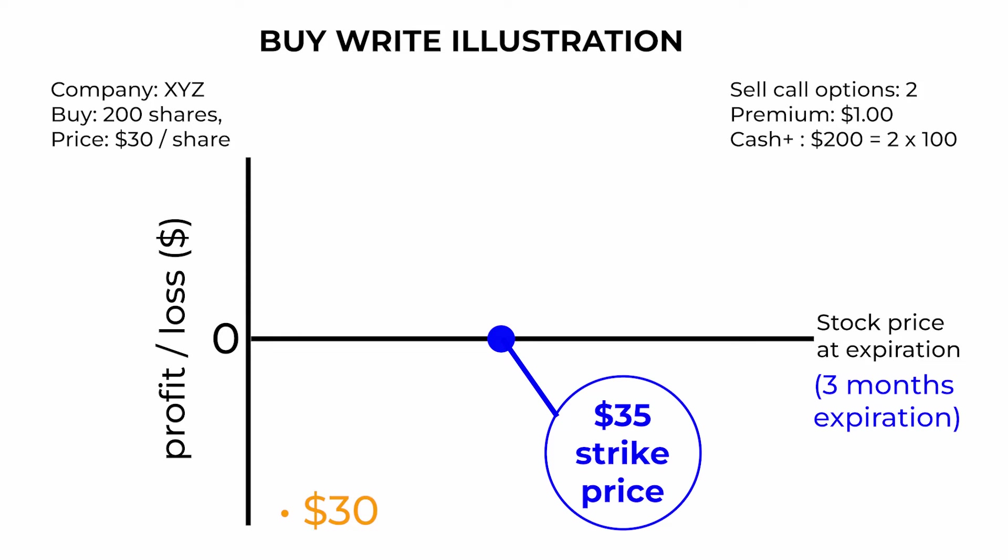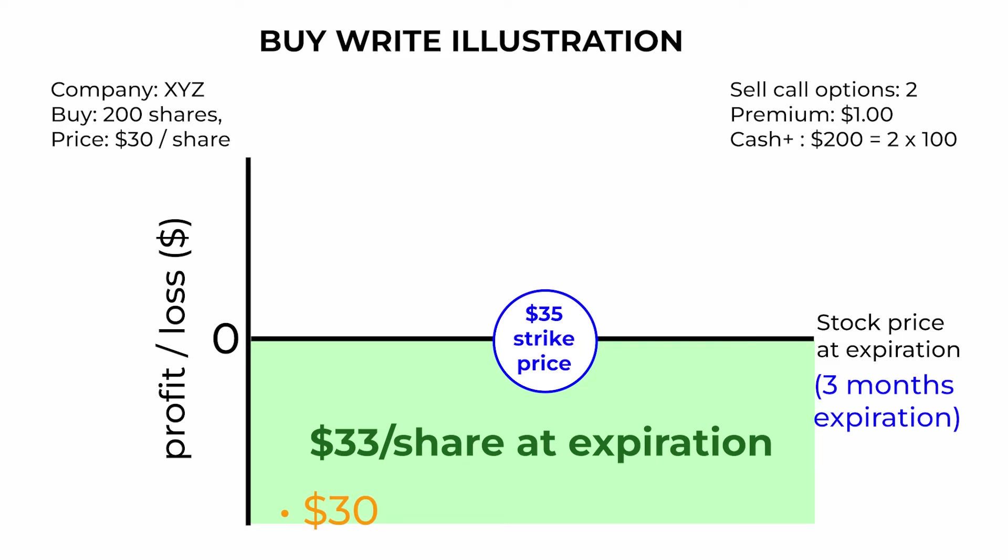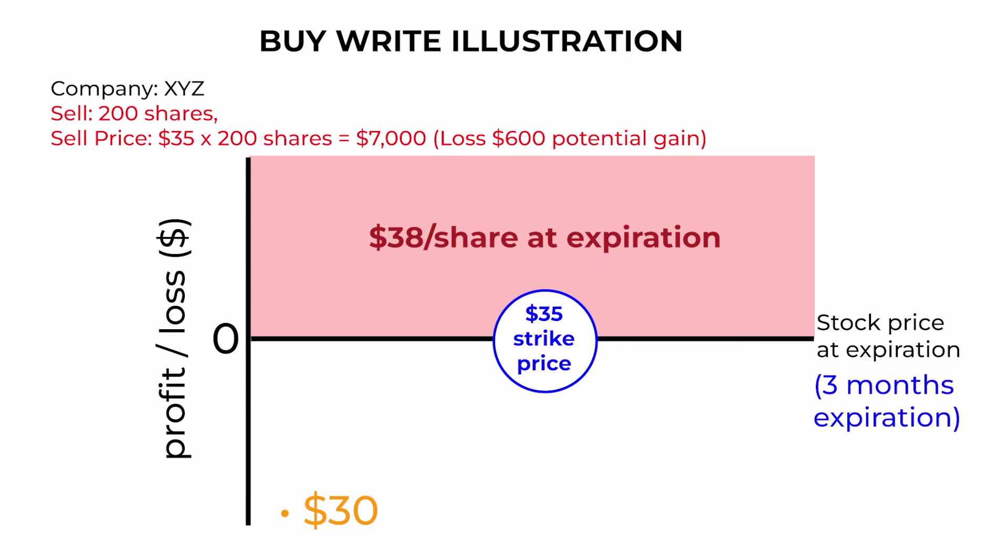For selling these options you receive a premium of $1 per share, totaling $200 — which is $100 per contract, since one contract usually represents 100 shares. Similar to the covered call, if the stock price stays below $35 until the expiration date you keep the premium. If the stock price rises above $35 and the call options get exercised, you may have to sell your shares at $35 per share.